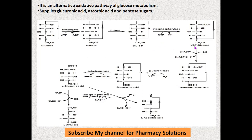This UDP-glucose undergoes dehydrogenation — four hydrogen atoms are removed by the coenzyme NAD⁺. Two hydrogens are removed from the molecule and two from water, taken up by NAD⁺. One oxygen remains and is attached to the sixth carbon atom to form a carboxyl group, so the CH₂OH becomes COOH. Only this change takes place; the rest of the structure remains the same.